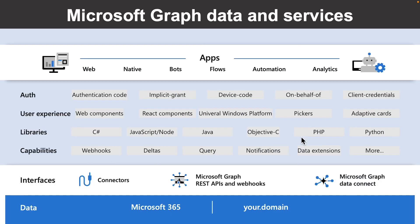The Microsoft Graph API offers a single endpoint — graph.microsoft.com — to provide access to rich, people-centric data and insights exposed as resources of Microsoft 365 services.